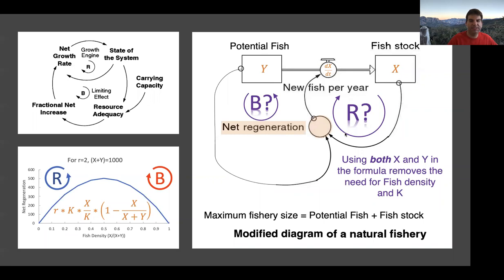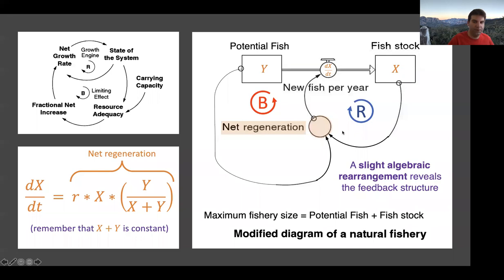This modified diagram helps us see that inside the net regeneration curve there's actually a reinforcing loop — as x increases, dx/dt increases — and a balancing loop — as y increases, the denominator of the formula increases, so the whole formula shrinks. So I've got a balancing loop here and a reinforcing loop here, and we're just implementing the standard logistic growth formula inside this dot.